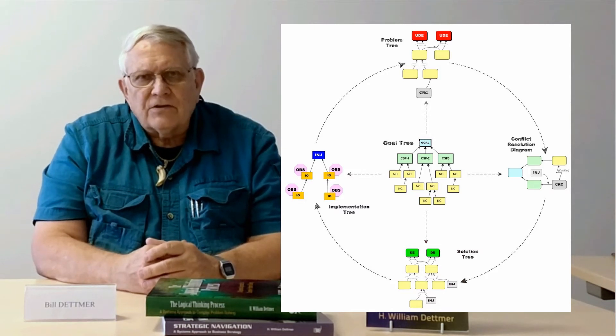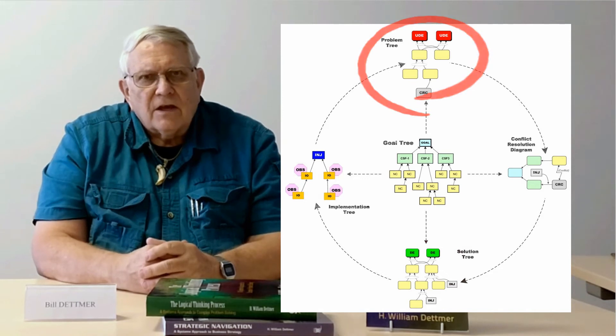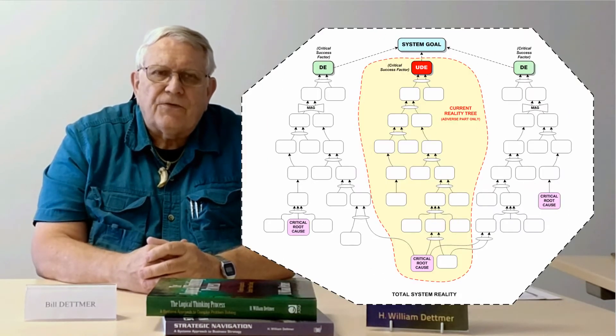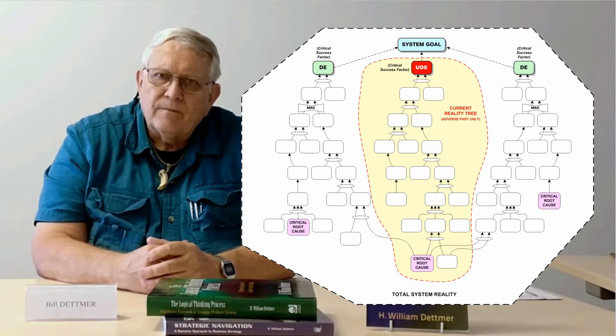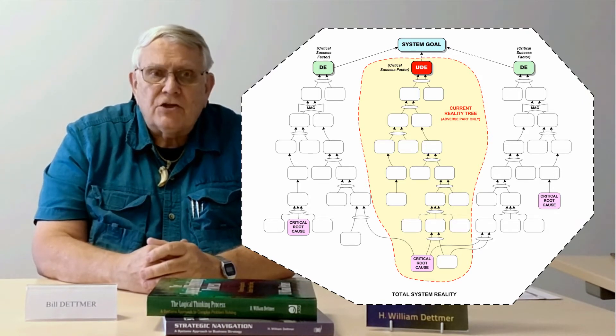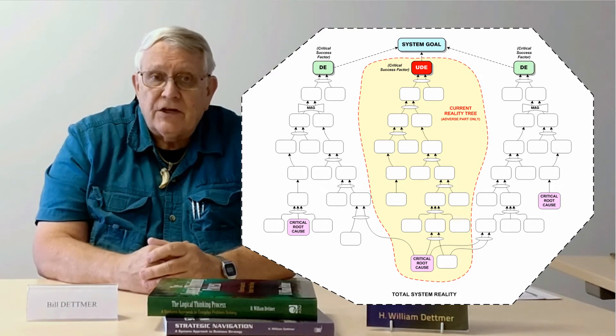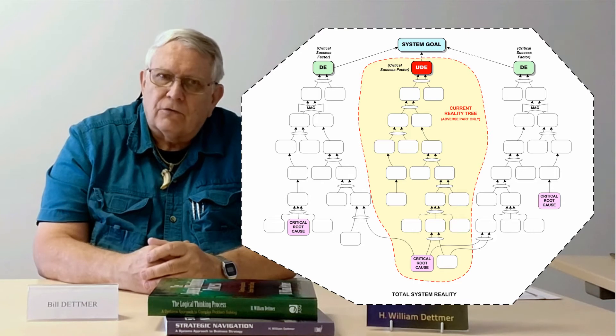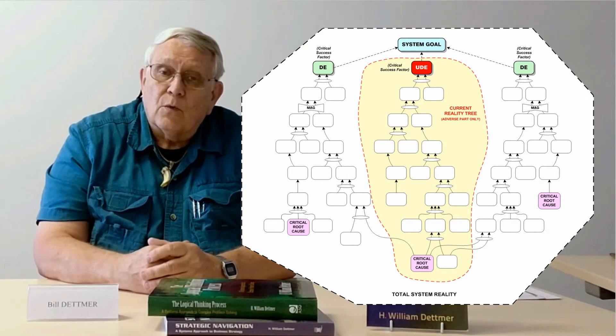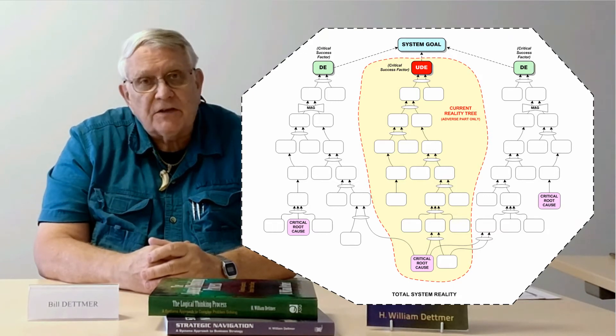The second step in the logical thinking process is the current reality tree. This is essentially a cause and effect diagram that presents a snapshot of what's happening now. Specifically, it shows in what ways the system is failing to meet the expectations set forth in the goal tree, and it traces the cause and effect of those failings back to the critical root causes. In other words, it answers the question: why is our system failing to meet our expectations?